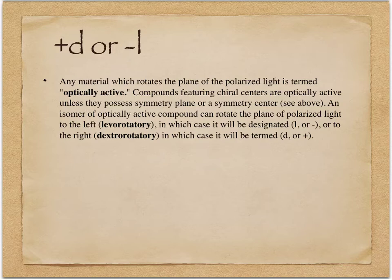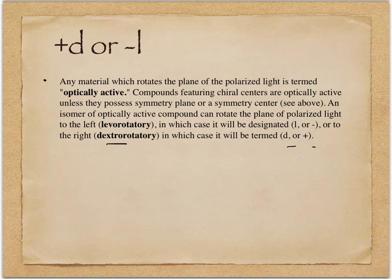Now, D or L — written as small d and small l, or plus and minus — is just referring to whether the compound is optically active. It doesn't necessarily relate directly to R and S configuration. If it's D or plus, it rotates light to the right. If it's L or minus — levorotatory — it rotates light to the left. D and L configurations are purely based on the direction they rotate polarized light and do not necessarily correlate to R and S configurations.